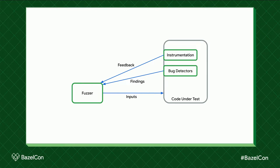On top of that, there are bug detectors, which are sometimes also called sanitizers — as in AddressSanitizer, which you may have heard of. Those detect bugs, security issues, and vulnerabilities in your code as the fuzzer runs them. These are also reported back to the fuzzer and reported as findings to users to fix.